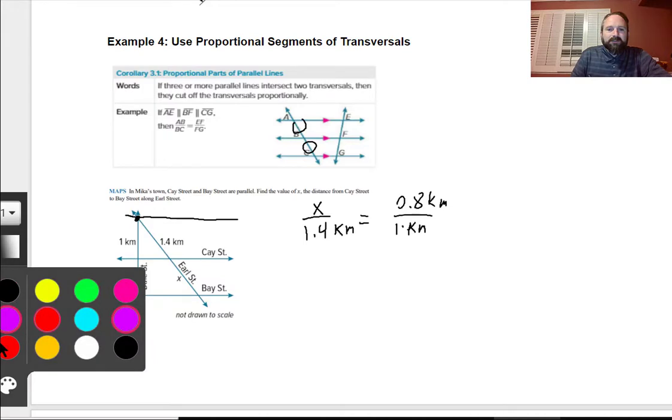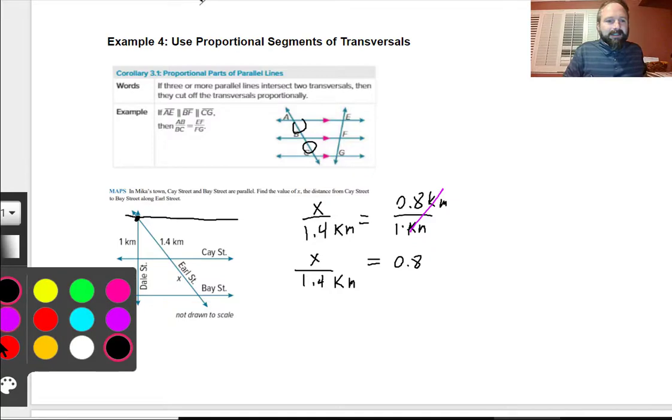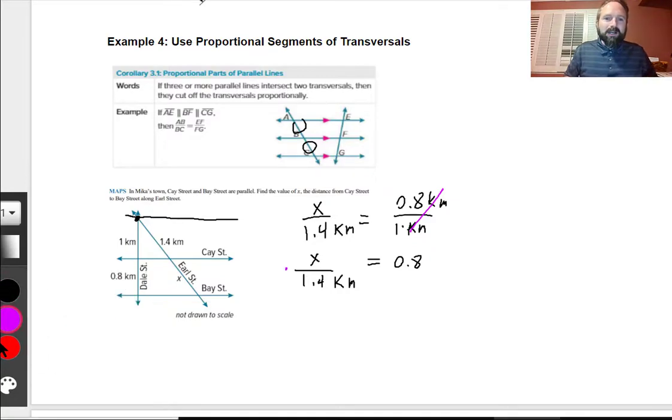So now I can just simplify, and now I can cancel this, and 0.8 divided by 1 is 0.8. So I have 0.8 is equal to X over 1.4 kilometers. Well, now with this, all I need to do is multiply by 1.4 kilometers on both sides. When I multiply by 1.4 kilometers, using my handy-dandy calculator, I get 1.12. But wait, I'm missing something. That wasn't multiplied by 1.4. It was multiplied by 1.4 kilometers. So I'm going to write km. So Earl Street right there is going to be 1.12 kilometers.